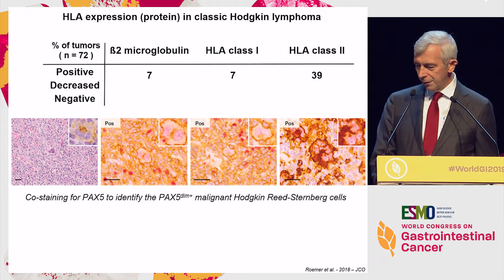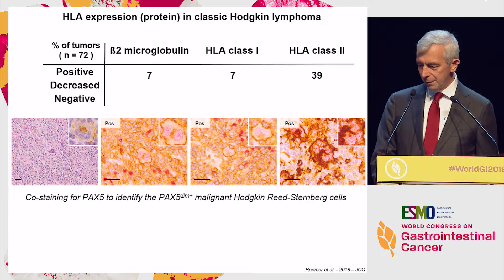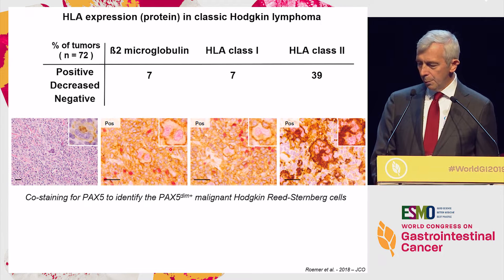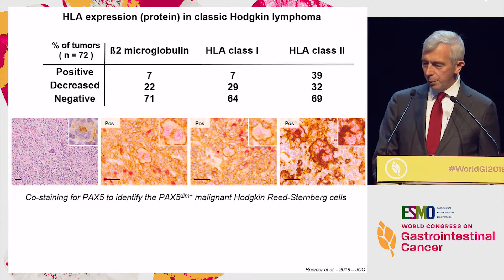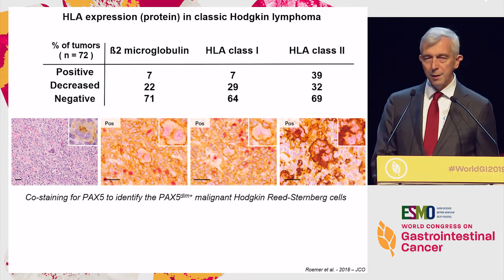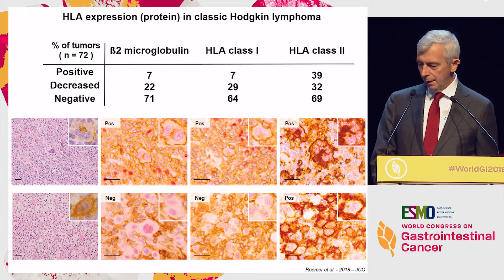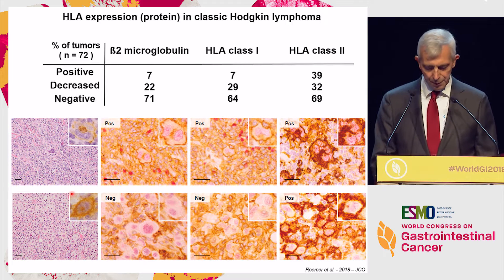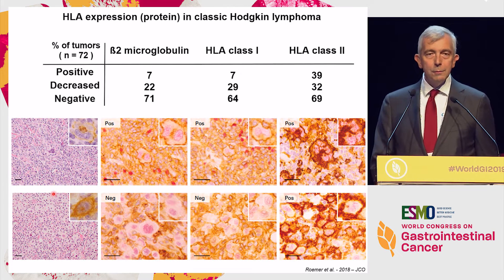You see here the inserts are Reed-Sternberg cells. There is also a staining with PAX-5, which is why it's yellowish throughout. This helps identify the Reed-Sternberg cells, which are dim for this staining. But you clearly see a membranous pattern of staining with beta-2 for class I and very strong staining for class II. Then there were samples with decreased expression and clearly samples with completely negative expression, at least with this technique.